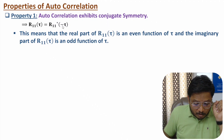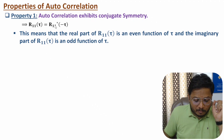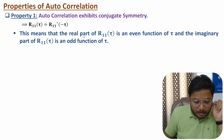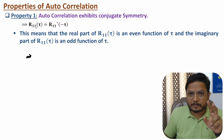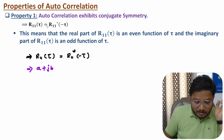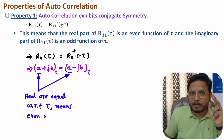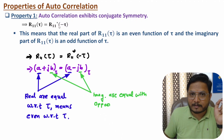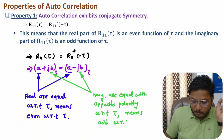From this conjugate symmetry, there are two things to note. If R₁₁(τ) equals A + jB, then it equals R₁₁(−τ) conjugate. This means the real component is the same on both sides — so the real component of R₁₁(τ) is an even function of τ. But the imaginary component is an odd function of τ, because of the conjugate.